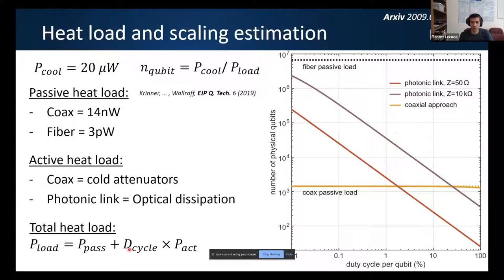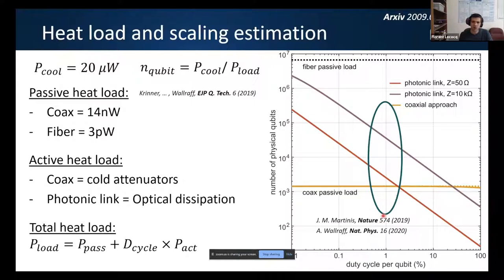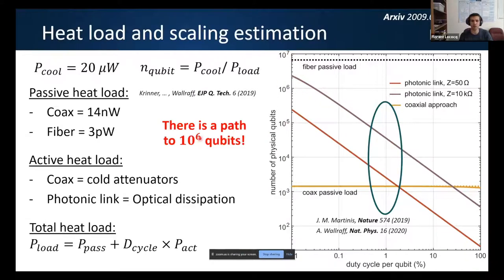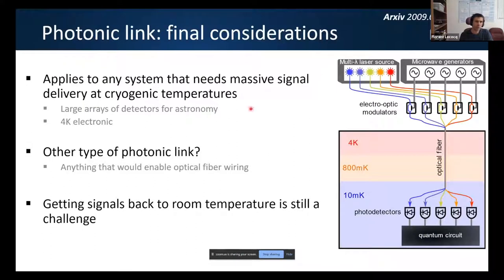By keeping sequences tight and reducing how often you repeat them — reducing duty cycle — you can enable a larger number of qubits, potentially approaching a million. This photonic link can also be used for delivery at 4 K or other applications. We are looking into other types of photonic links with smaller heat load, and working on options to get signal back up to room temperature.